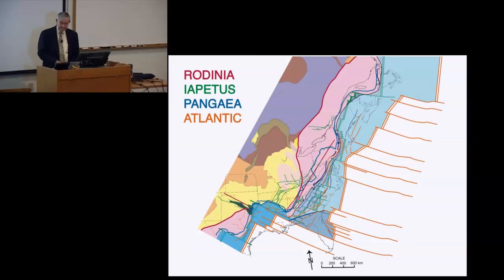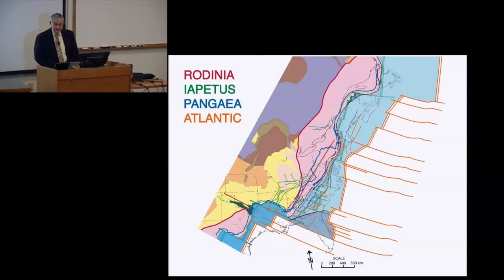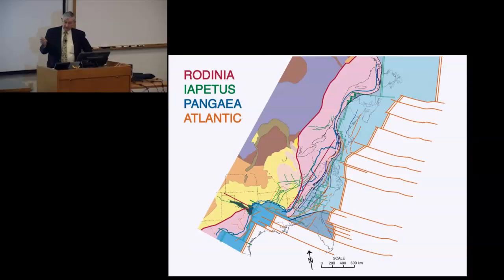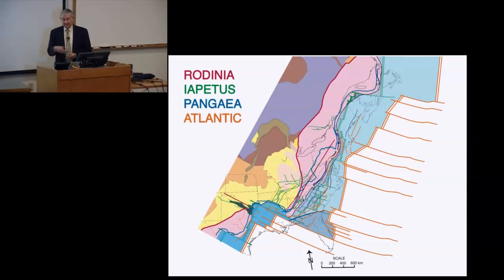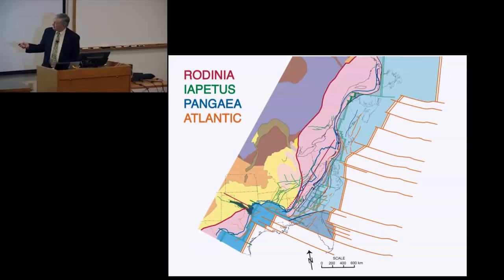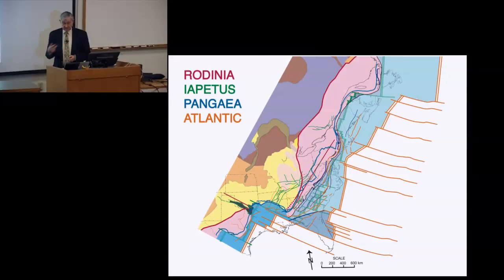Q: Can you tell us about what is known or speculated about the pre-Rodinian supercontinent? A: At the level of detail I've presented, we can only suggest things like the age of these dikes. Several earlier supercontinents have been recognized by piecing together geochemical similarities. There's a cyclicity of supercontinents at roughly the same time frame — roughly every 400 to 700 million years there's another supercontinent cycle.